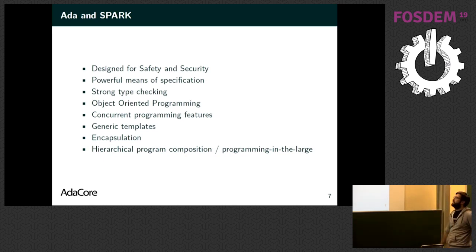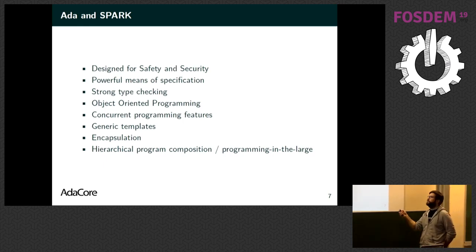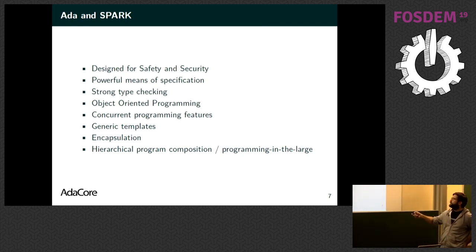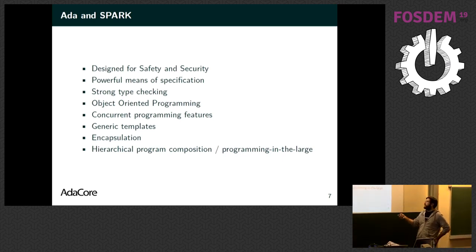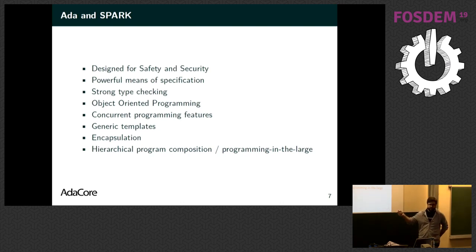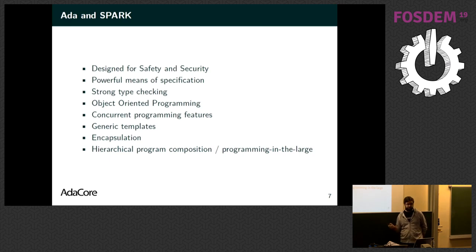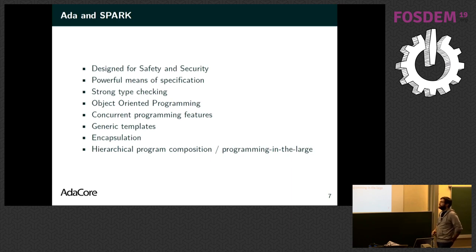Some keywords about Ada and Spark: these languages are really designed from the ground up for safety and security. Probably the most important features are powerful means of specification — I will show you that — and strong typing. Ada and Spark are not only strongly typed; they also give you a lot of ways to define your own types, which is really important. And then you have all the good stuff: object-oriented programming, concurrent programming, generics, et cetera.